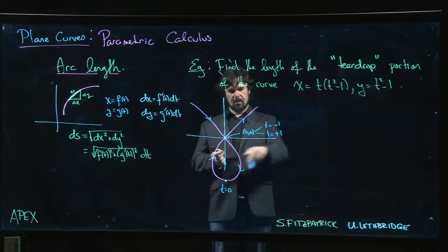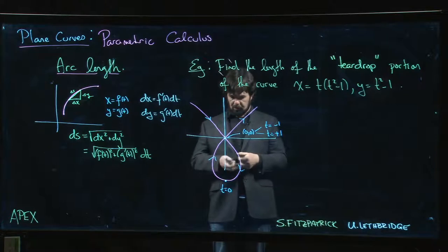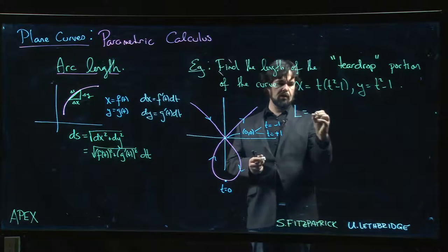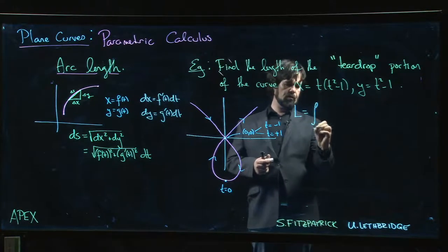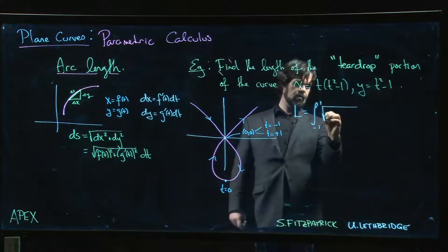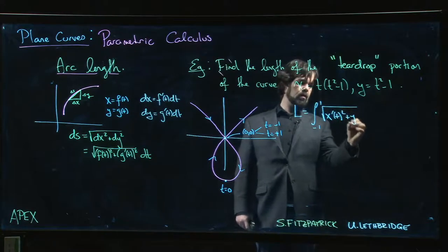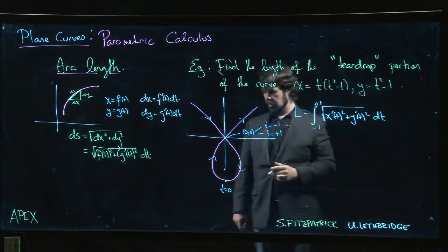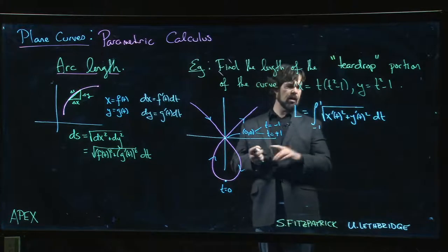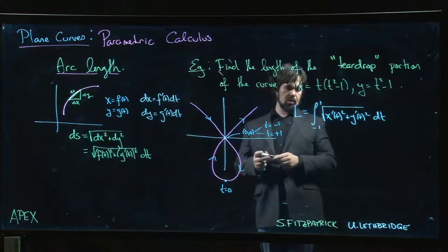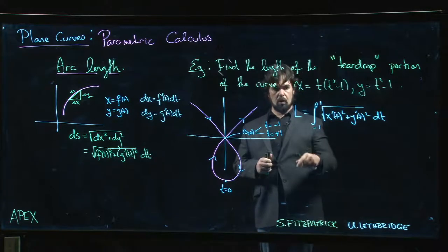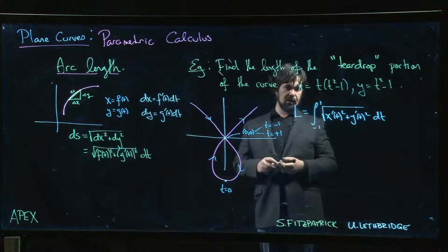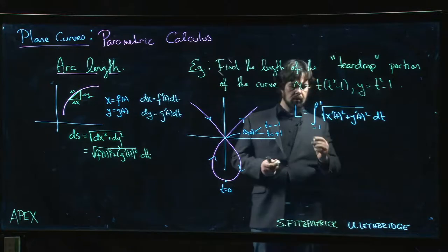Okay so if we're trying to get the length of the teardrop, well we should go from minus one to one. So that suggests that the length of the curve should be the integral from minus one to one of the square root of x'(t)² plus y'(t)² dt. Now because we have the picture and we can see the symmetry, I mean you can kind of see the symmetry from the equations, you could also argue that the length I could just go from zero to one and double, which suggests that probably we should get an even function under the integrand. But let's confirm.